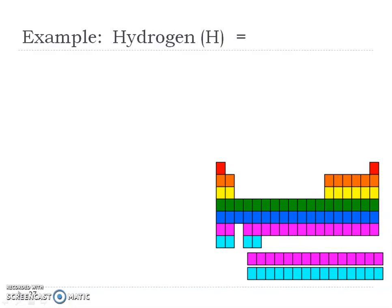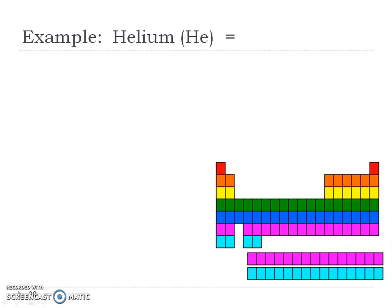Let's look at hydrogen. It's the first element, so it has one electron. We have one box for the 1S orbital that gets filled first, with one arrow going up. That's the entire orbital filling diagram for hydrogen. Now helium — the second element — has two electrons. Again the 1S: we have an arrow up and an arrow down. That's two electrons, and we're done with helium.